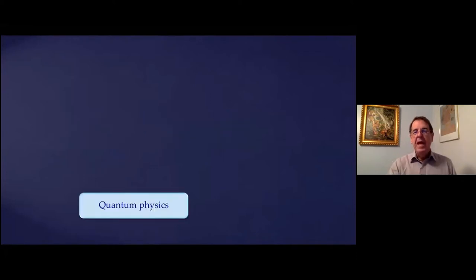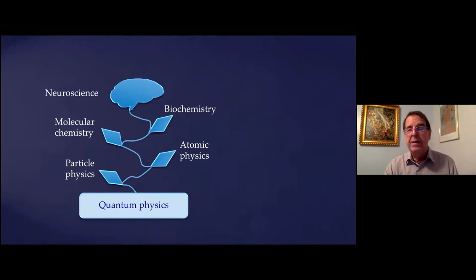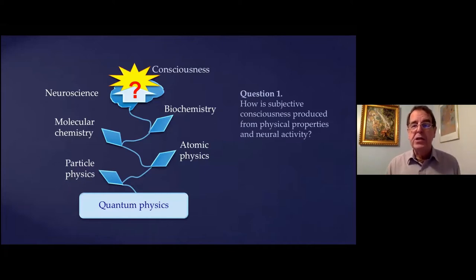Physics has as its base currently quantum physics and that gives rise to particle physics which in turn gives us an understanding of how atomic physics works. From the atoms we have molecules and molecular chemistry, in a more complex form we have biochemistry, and that leads on to neuroscience. That becomes our picture of what physics covers from top to bottom. Now the big question is consciousness. The suggestion is that consciousness is simply a product of advanced neural activity, that the brain reaches a certain level of complexity in which it can generate this thing we call consciousness. But that is a very big question. How is subjective consciousness produced from the physical properties and neural activity that go on within our brain?